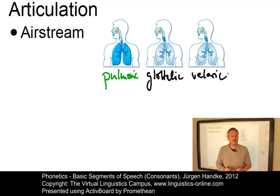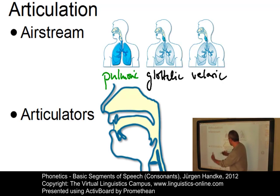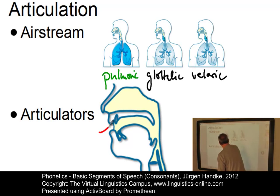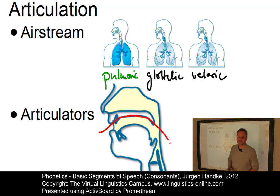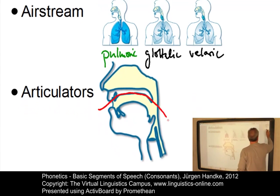To understand the main articulatory parameters, we have to deal with some anatomical details about the vocal tract first. Consonants can be articulated at any point along the upper surface of the oral cavity — along this line here. The point of this upper surface involved in the articulation of a consonant is referred to as the passive articulator.